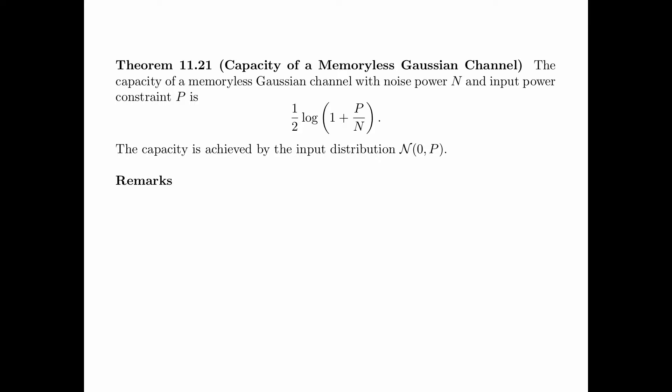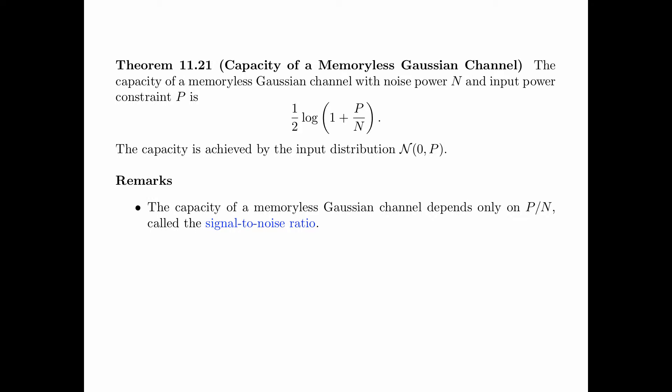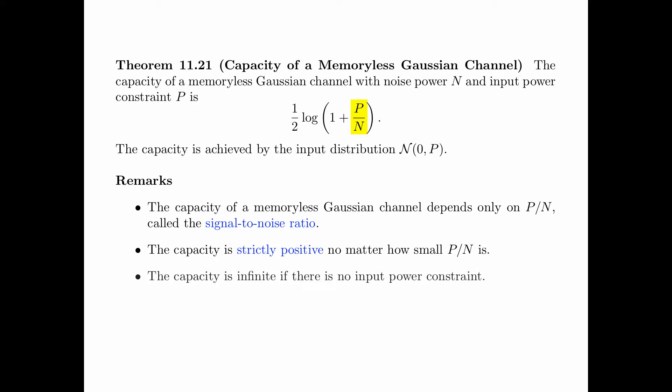Here are a couple of remarks. From the above formula, we see that the capacity of a memoryless Gaussian channel depends only on the ratio p/n, called the signal-to-noise ratio. Observe that the capacity is strictly positive no matter how small the signal-to-noise ratio is, because the logarithm is always greater than 0. When there is no input power constraint — that is, when p is equal to infinity — the capacity is infinite.